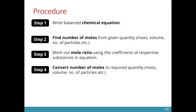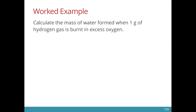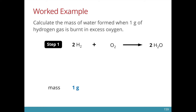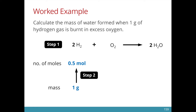Now let's apply this 4-step approach to solving a problem. In this question, you are asked to calculate the mass of water formed when 1 gram of hydrogen gas is burnt in excess oxygen. The first step is to write the chemical equation — be sure to balance it properly, otherwise you will get the ratios wrong. Now we are given the mass which is 1 gram. The next thing to do is to convert this quantity into moles, because in order to compare reactants and products, we have to use the mole ratio. Using the formula — number of moles is mass over molar mass — we calculate that there is 0.5 moles of hydrogen.